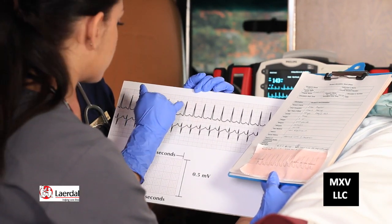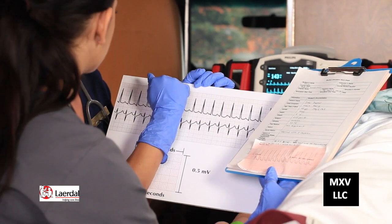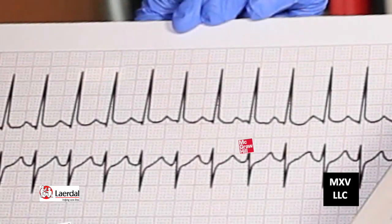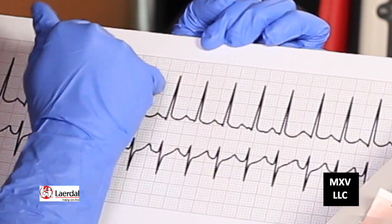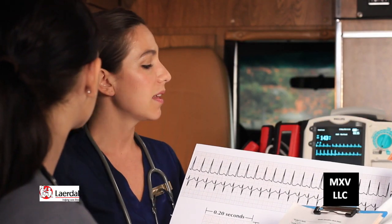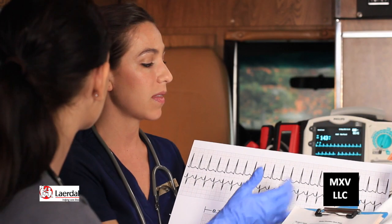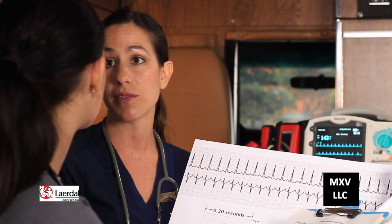To determine heart rate, count how many large boxes are between each R-wave peak. There are two large boxes. Multiplying two by 0.2 gives 0.4 seconds per cardiac cycle, corresponding to a heart rate of 144 beats per minute — which matches the patient's heart rate. Alternatively, take 300 divided by the number of large boxes (two), giving 150 as an approximate average.